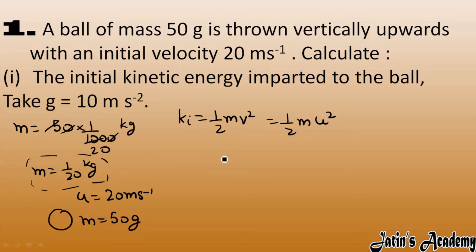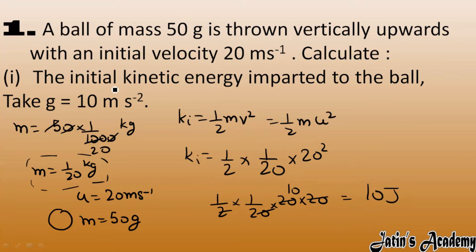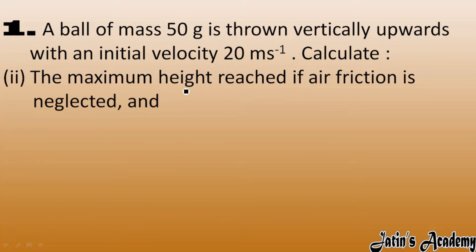Now let's calculate the kinetic energy. Initial kinetic energy = ½mv². Mass is 1/20 kg and velocity is 20 m/s, so v² = 20 × 20. The 20s cancel with the denominator, giving us 10 joules. The initial kinetic energy imparted to the ball is 10 joules.